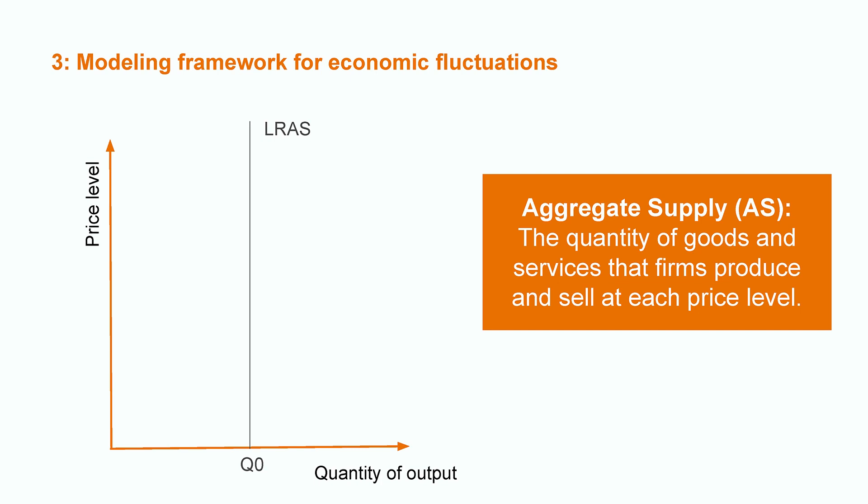This is the potential level of output in the economy. If all prices and wages in the economy can be renegotiated, this is the output level that can be produced. In the short run, however, prices and wages are sticky — it takes time to renegotiate them and agents take them as fixed. Hence, in the short run, the supply curve, represented by SRAS, is a familiar upward sloping curve.